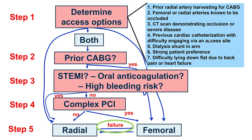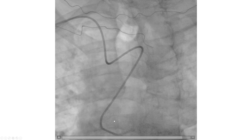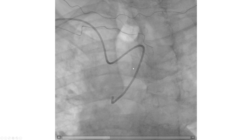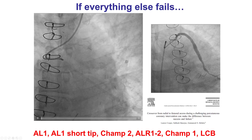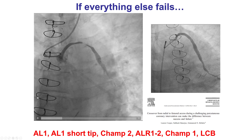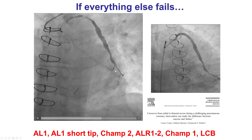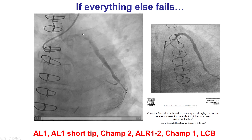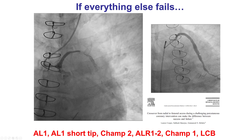Finally, one can start with either radial or femoral, but sometimes the initially chosen strategy fails. This is an example where right radial was obtained, but engagement was extremely challenging due to subclavian tortuosity; in this patient, it makes sense to go left radial or switch to femoral. This is another example in which performing PCI of a bypass graft was extremely challenging using radial access, but was easily accomplished using femoral access.